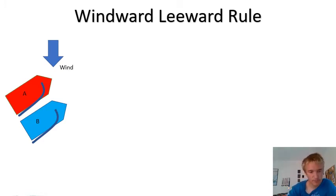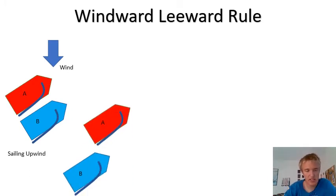And then if we go to another situation, there's still the leeward boat as B, A is still the windward boat, but the difference is that they're still overlapped because B is still in front of A's stern. The stern is the back of the boat, and that means they still count as the windward leeward rule when they're on the same tack.